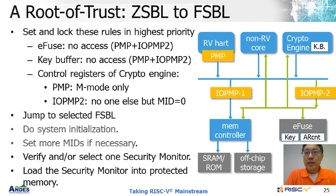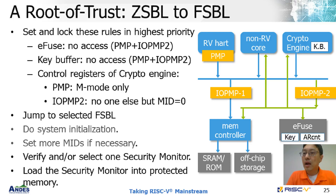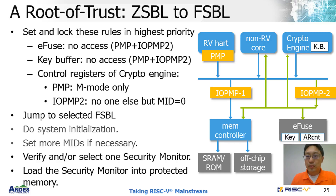So far, ZSBL has already finished the access to the eFuse, so from now on the eFuse region should be denied all access until the next boot. In PMP and IOPMP2, the rules to deny should be at the highest priority and with a sticky lock. Besides, the MMIO channel to the key buffer should also be blocked by using PMP and IOPMP2. The crypto engine should be controlled only by the designated issuer — in our example, we limit it to M-mode programs, which are Security Boot and Security Monitor.